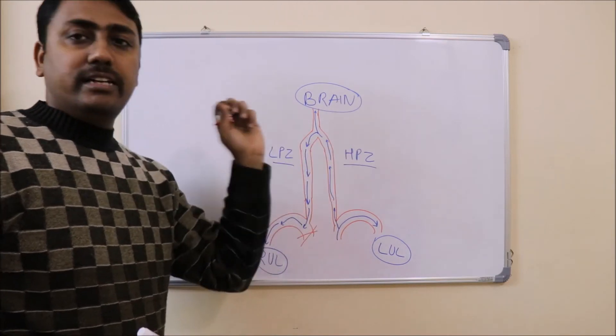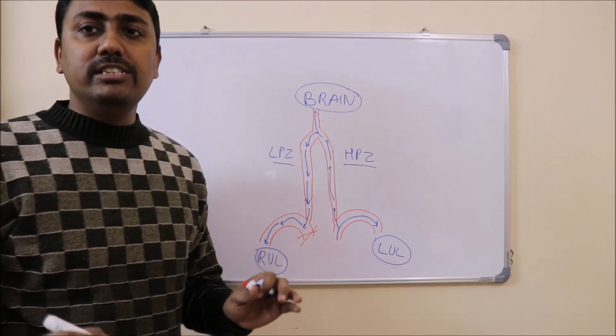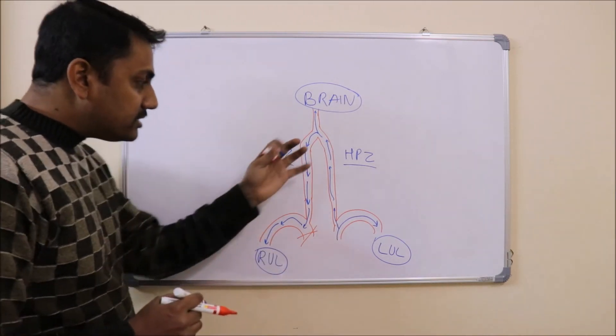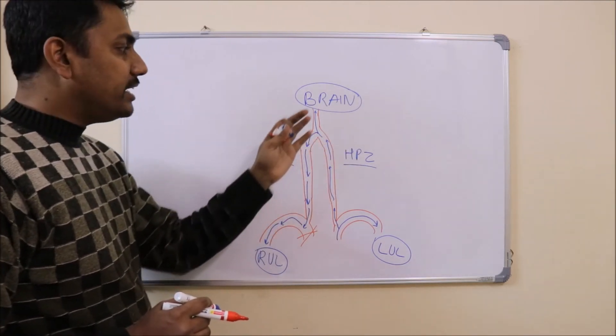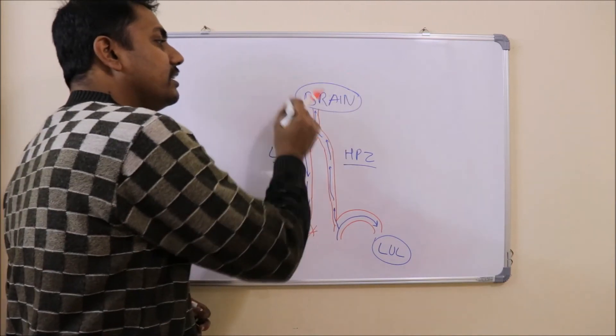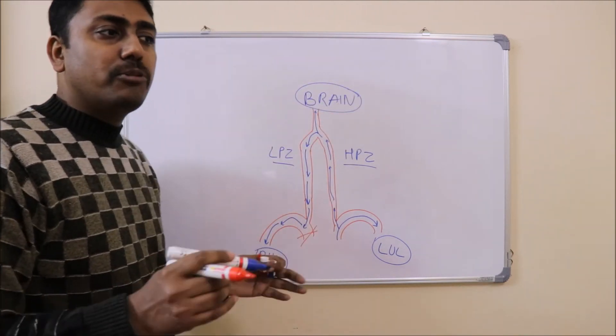This is known as subclavian steal syndrome. So what are the complications of this? As this side is stealing blood from this, basically you see it is stealing blood from the brain. So there will be less blood supply to the brain that will cause ischemic neuropathies in the brain or ischemic neurological symptoms like syncope or fainting.